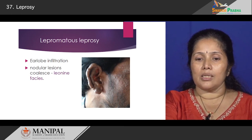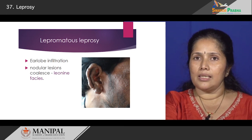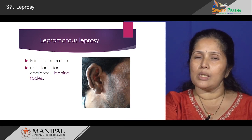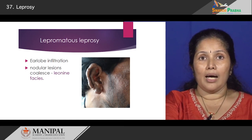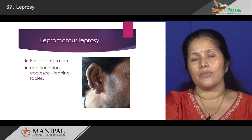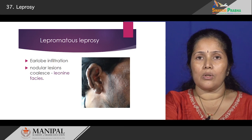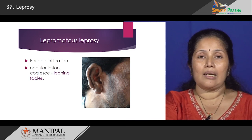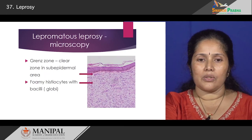In this picture you can see a patient who has ear lobe infiltration. These nodular lesions coalesce — they join together and form larger lesions — and they become so extensive that we have what is known as a leonine face, or a lion-like look of the patient. That is a very classic look of lepromatous leprosy patients.